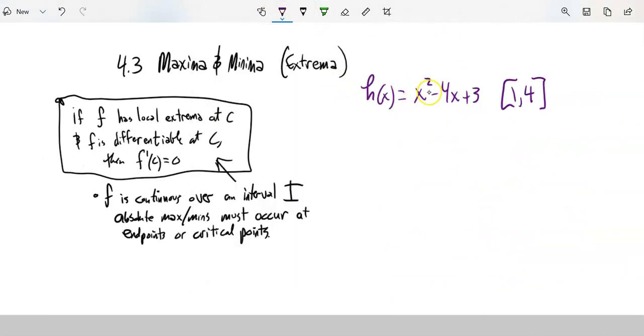So I have this function h of x is x squared minus 4x plus 3 on this interval [1, 4]. I want to find the max and mins, absolute max and mins on it. And I know that it has to either happen at the endpoints or when the derivative is either undefined or 0. So I'm going to take the derivative, 2x minus 4. Set that equal to 0, x equals 2.